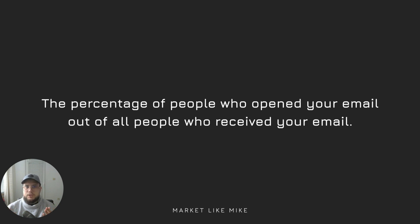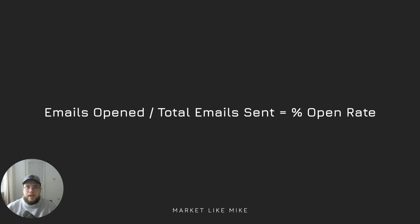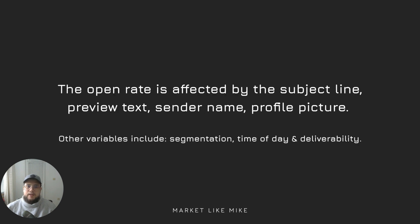Let's start with the first metric: the open rate. The open rate is the percentage of people who opened your email out of all the people who received your email. An email open is counted when the images in the email load, or when the user clicks on a link in the email even if the images did not load fully. The formula is emails opened divided by total emails sent, giving us the open rate in percentages. For example, if 50 emails were opened out of 100 sent, this gives us a 50% open rate.